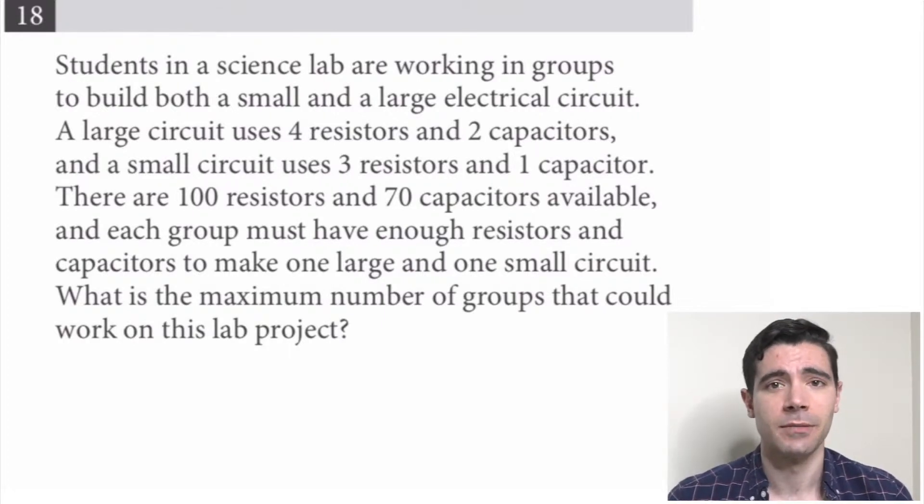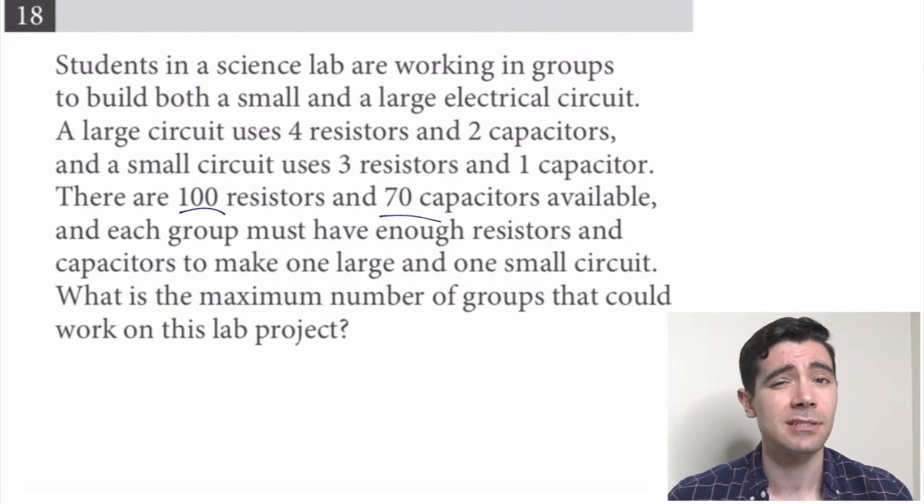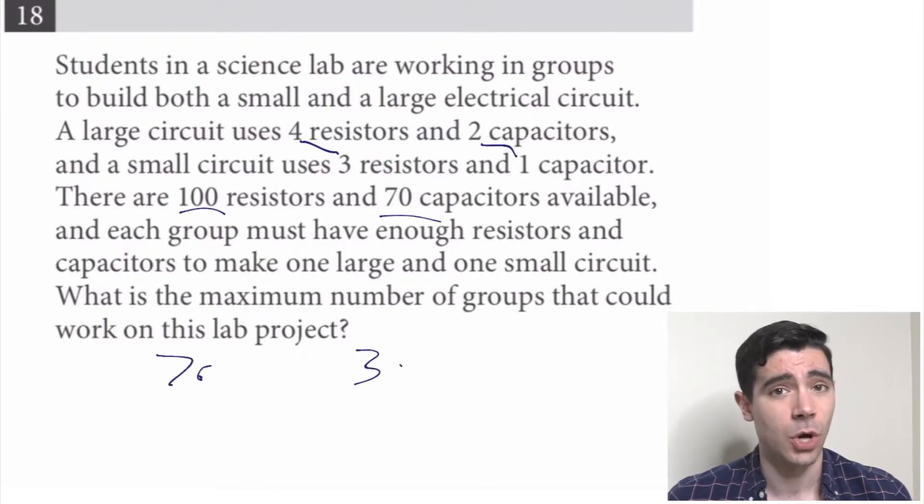A lot of numbers going on here, but they're asking me about the maximum number of groups that could do something, which means that my supply of resistors and capacitors must in some way limit how many groups there can be. Well, how much equipment does each group need? They need enough to make a large and a small. So if you combine them, that's seven resistors and three capacitors. And they tell me that in total, I have 100 resistors and 70 capacitors.